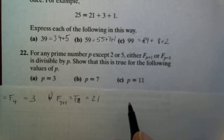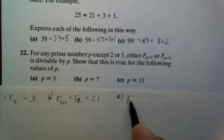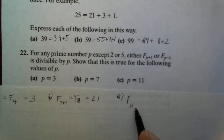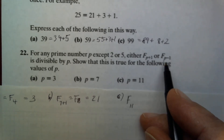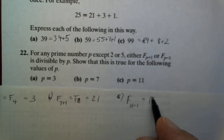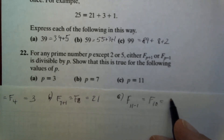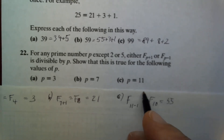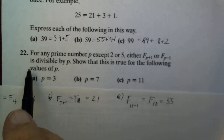And for part C, with P equals 11, we use F sub (P minus 1), which is F sub 10. The tenth Fibonacci number is equal to 55, and that is obviously divisible by P equals 11. So that's what number 22 was all about.